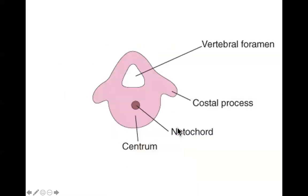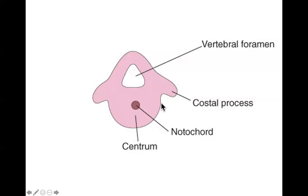Ribs are next. Basically what's going to happen with the ribs is you have this thing called the costal process, and that is going to grow out and expand, growing around the front of the body. As it does so, it's eventually going to chondrify and then eventually ossify. During the embryonic period, synovial joints are going to form between the rib and the vertebral body, and another one where the transverse process will eventually be.